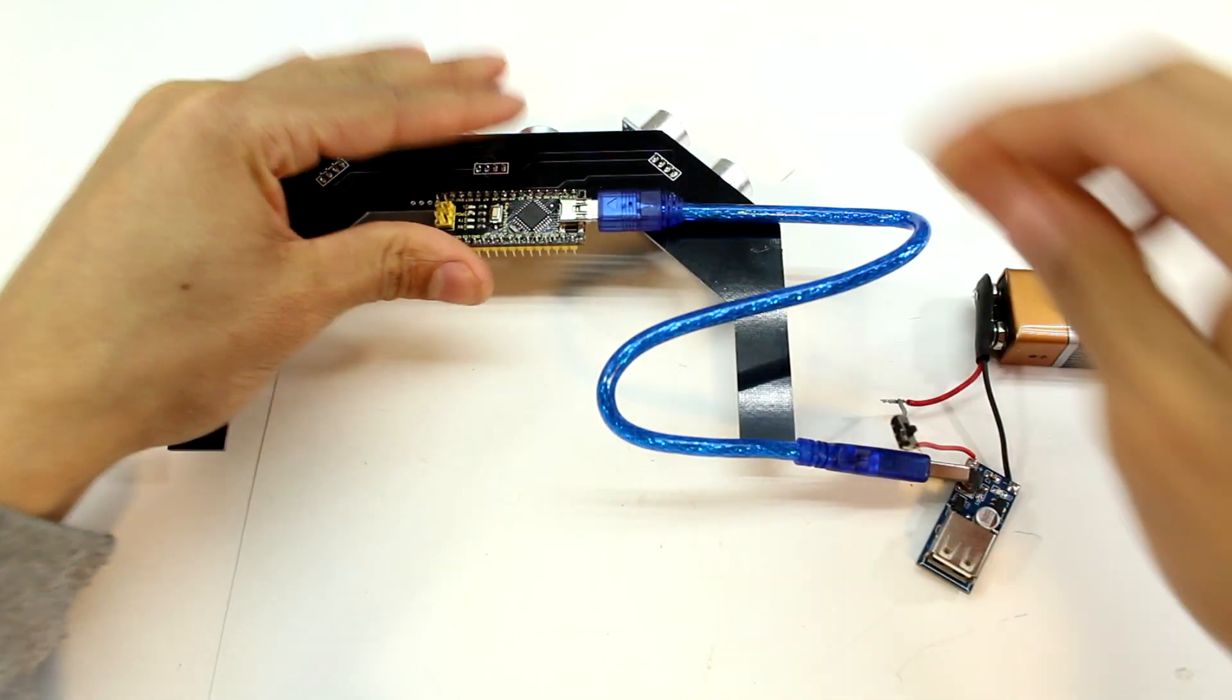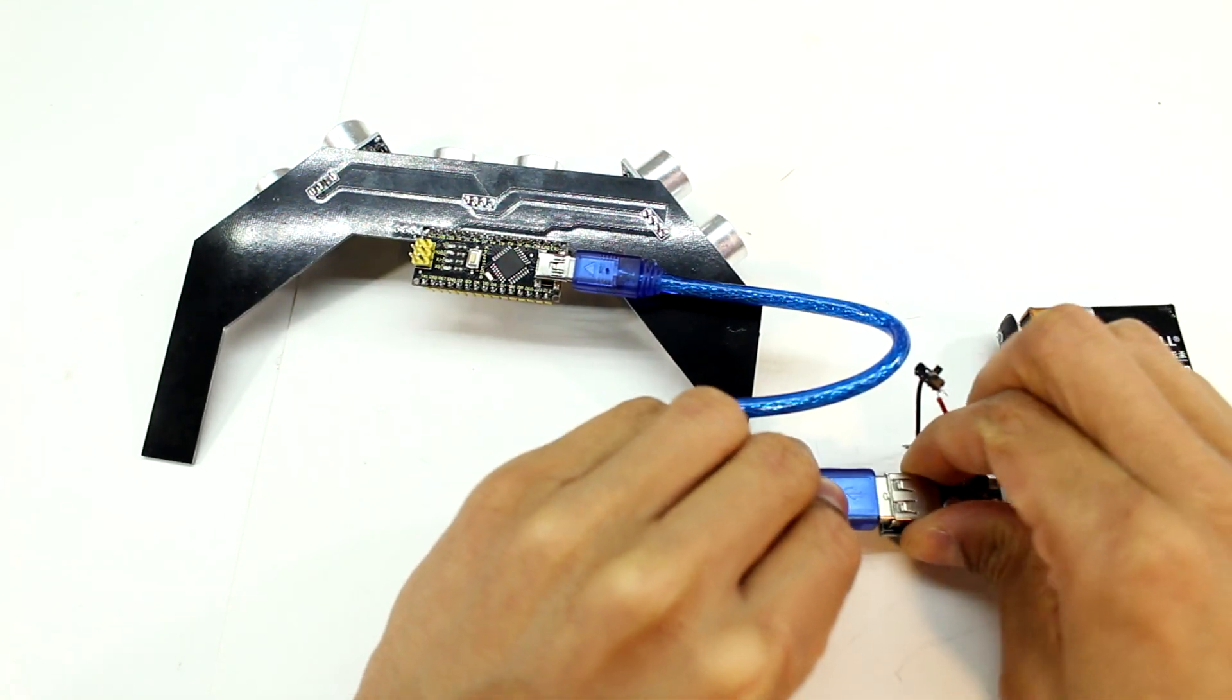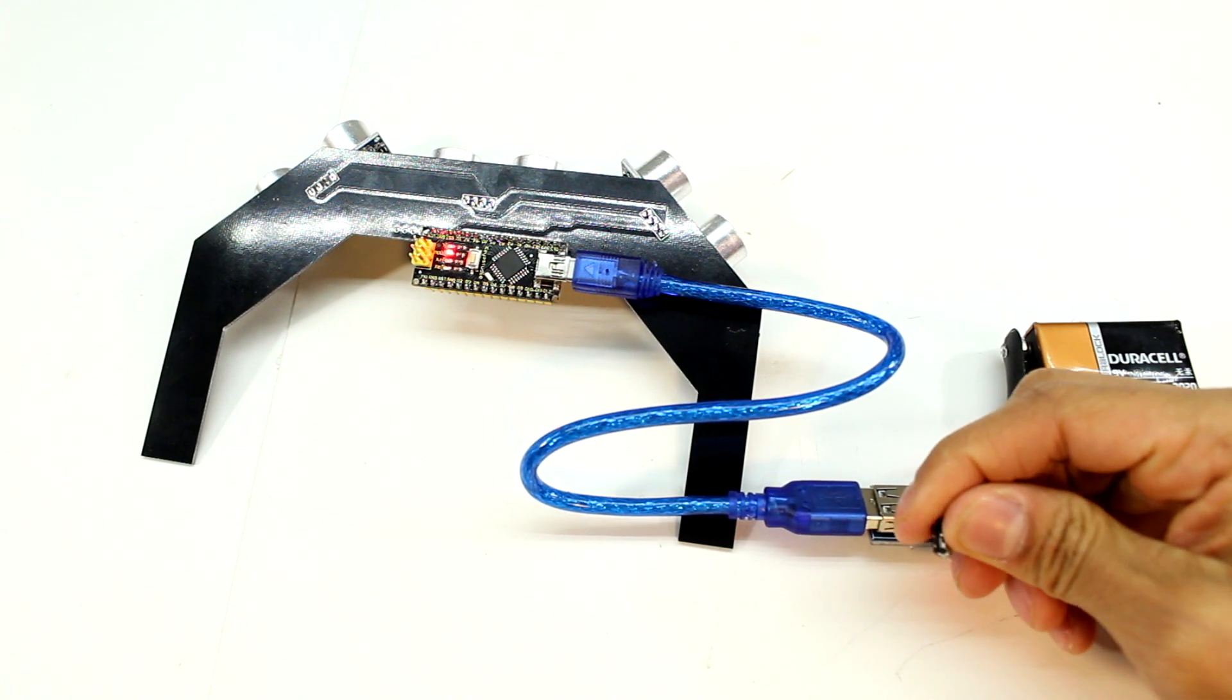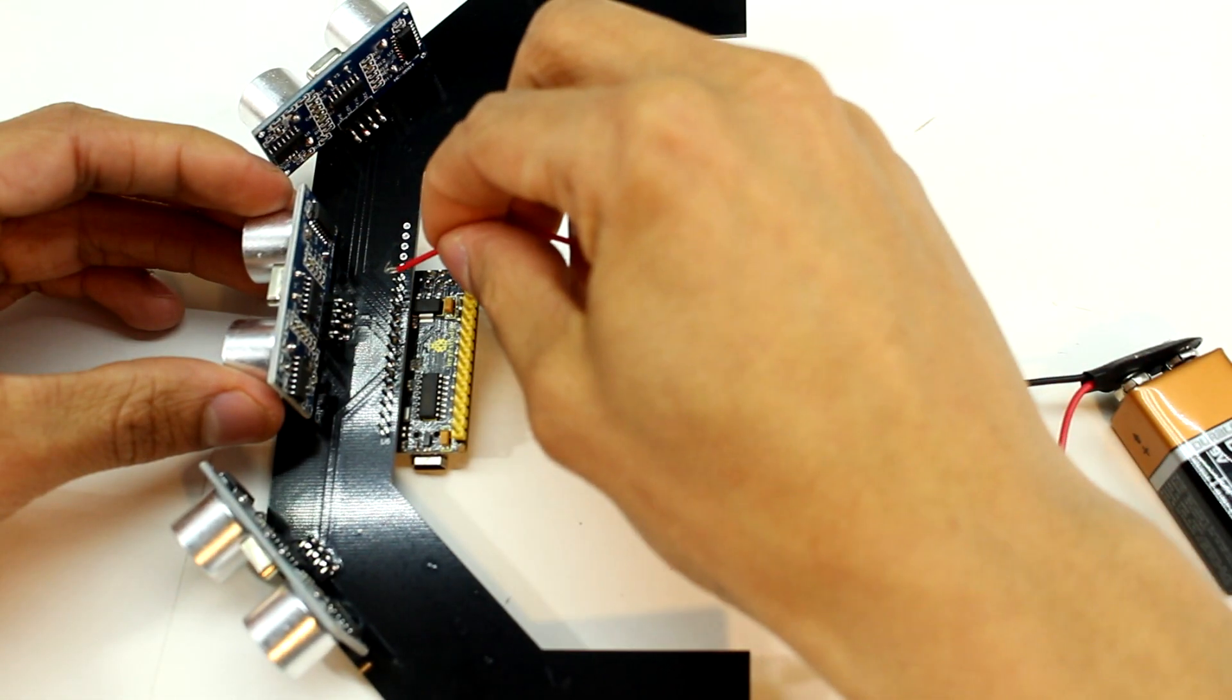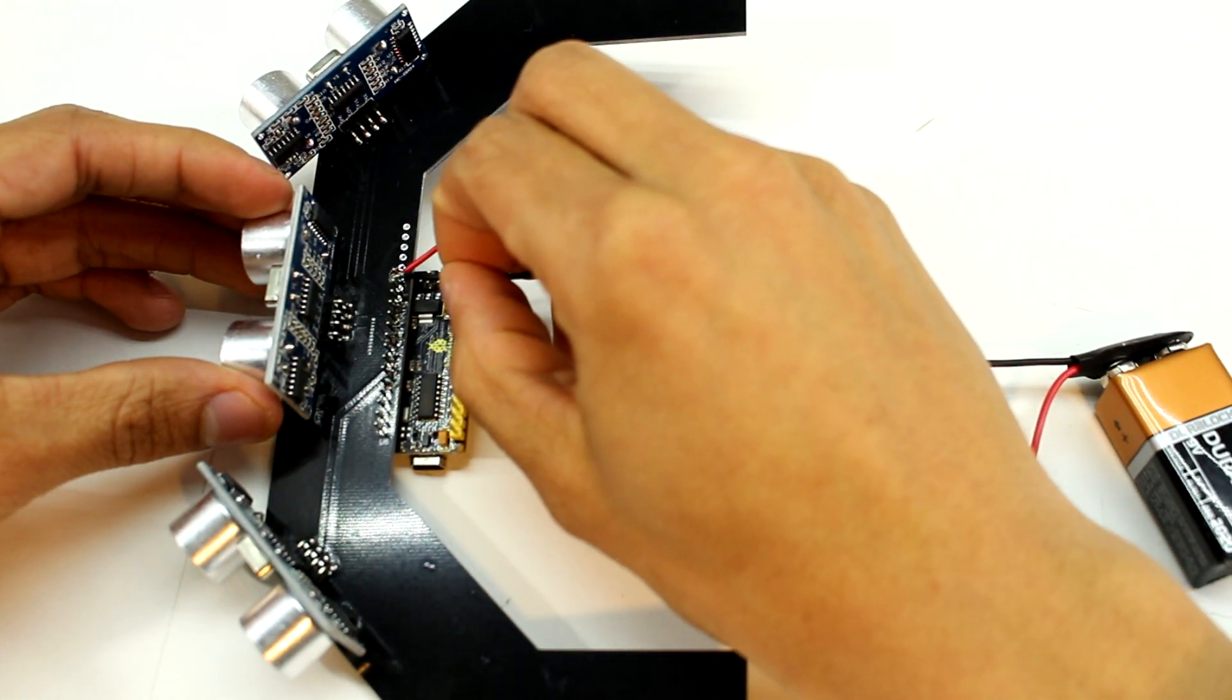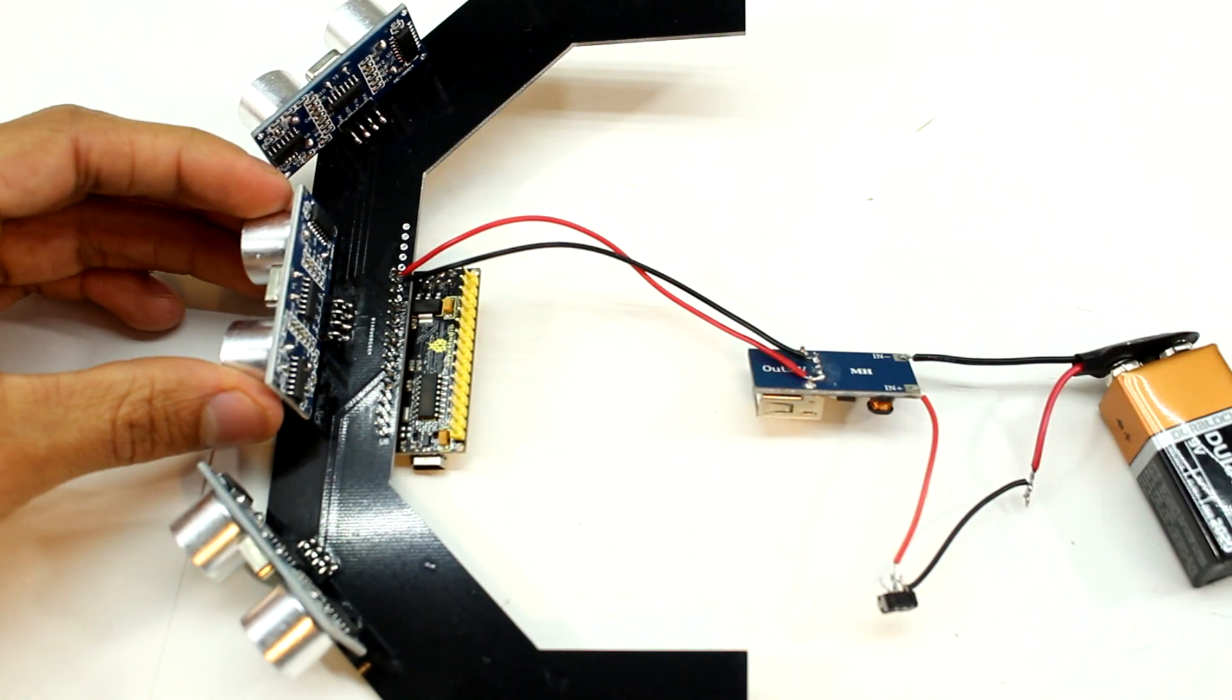Now once I wire the boost converter up to the battery I can plug it directly into the Arduino via this USB port. But as you can see this cable is really bulky, so to make it more compact I get the red and black wire and I solder it to the bottom of our boost converter and then all we have to do is attach it to the ground and the VIN of the Arduino.